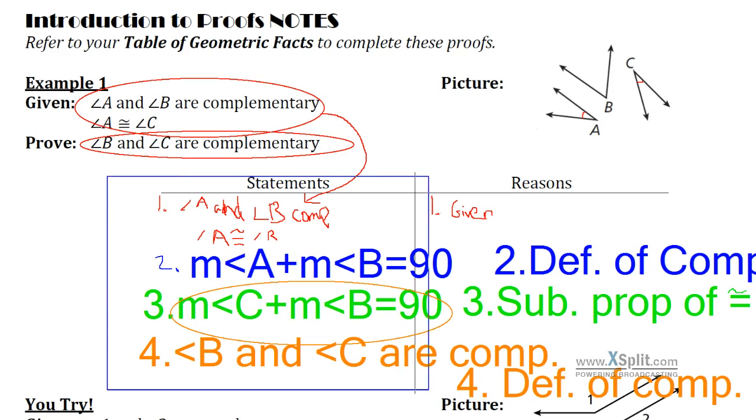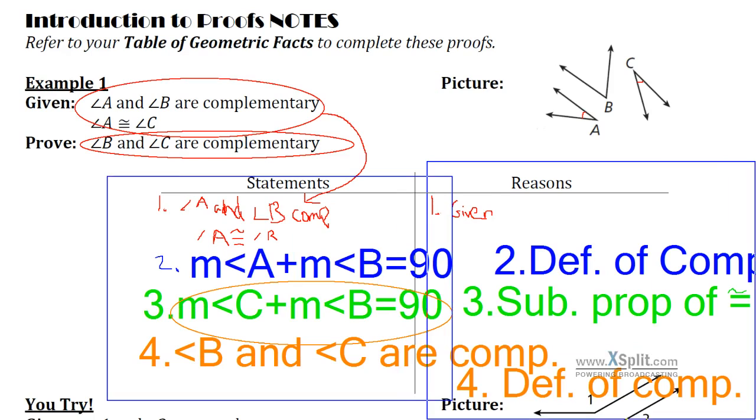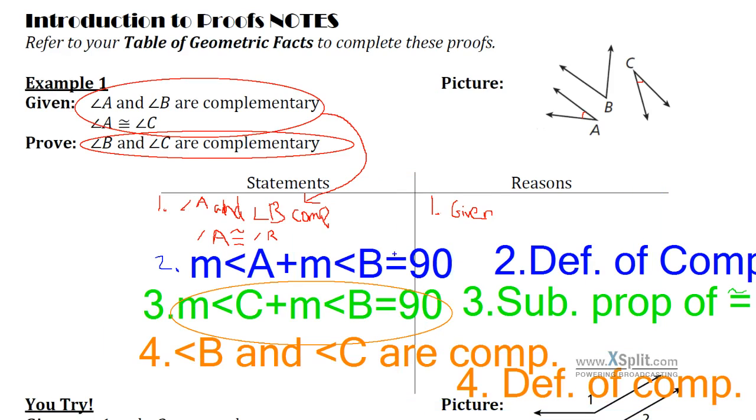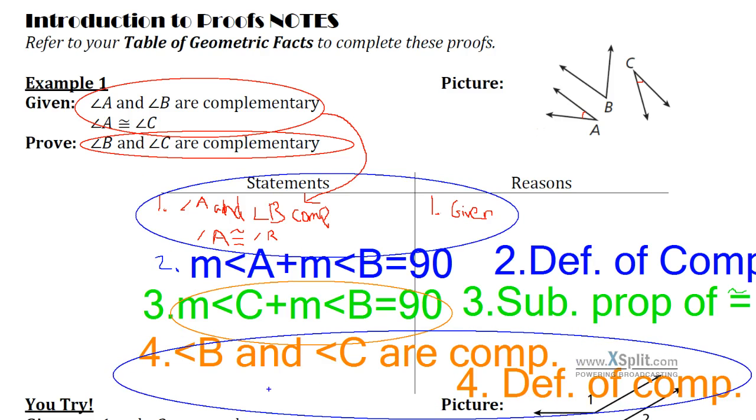So here we have the general structure that we're going to see in our proofs. Every single proof is going to have a series of statements that you're going to make, followed by reasons for why you're allowed to make those statements. It's called a two-column proof. They're pretty common in geometry. And you're always going to start your proofs with your given information. And then you're going to go on and say a few things that back your argument up that, yes, this conclusion is a true statement.